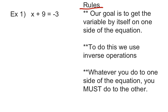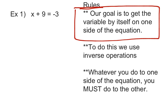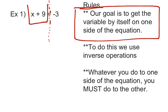Rule number 1: our goal is to get the variable by itself on one side of the equation. The equal sign separates the equation into two parts. If I draw a dotted line, I have x plus 9 on one side and negative 3 on the other. I want to look at the side with the variable. I don't want it to be x plus 9 — I just want it to be x. X is selfish; it just wants to be x. Eventually my answer is going to be x equals something where x is all alone. So I have to get rid of the plus 9.